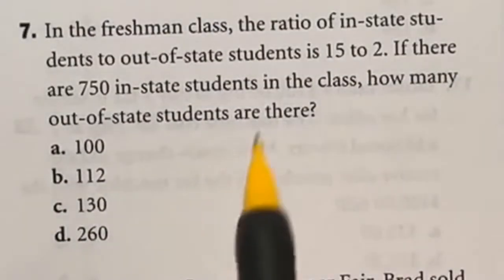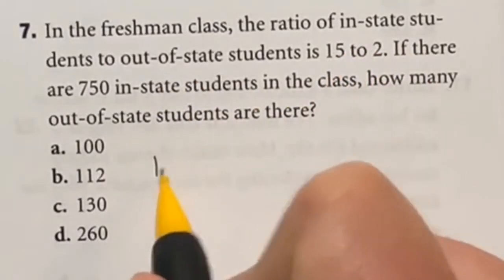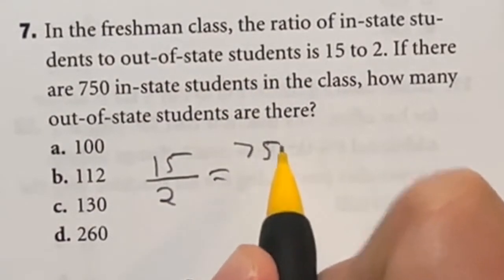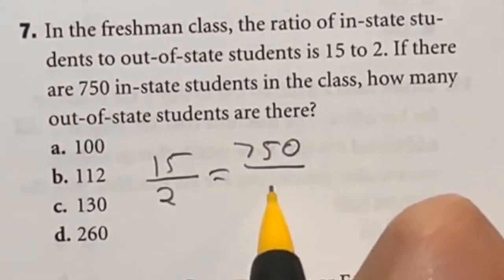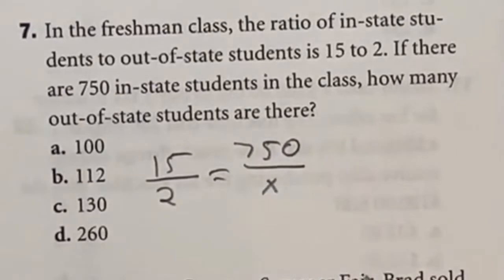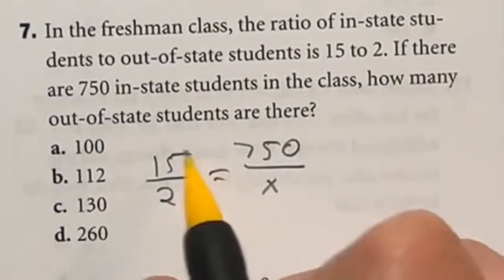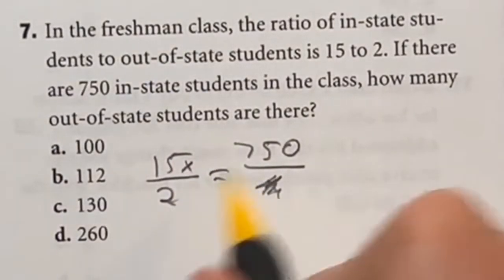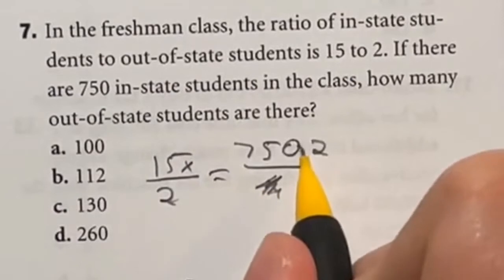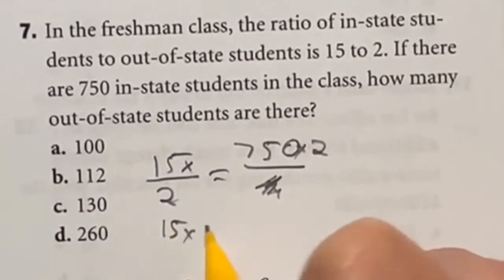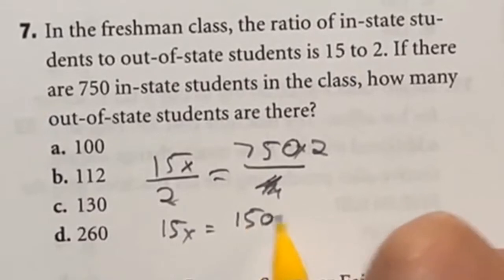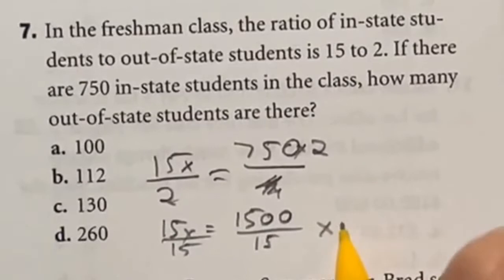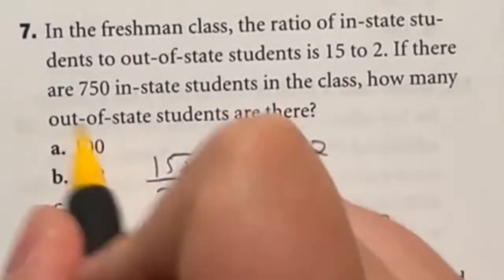So let's set this up. It says that the ratio of in-state to out-of-state is 15 to 2, and it says that we have 750 in-state. So how many would we have out-of-state? Well, this is just solving for x here. So what I'm going to do is multiply x to this side to give me 15x, but it'll cancel it out over here. Then I'm going to multiply the 2 to this side to give me 15x is equal to 750 times 2 is going to be 1500. Divide both sides by that 15, and that's going to end up giving us that x is equal to 100, which is answer A.